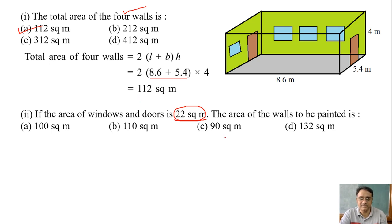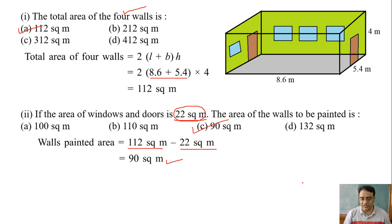Area of 4 walls minus area of windows and doors. Very good. So area of 4 walls minus area of windows and doors, that is 112 minus 22. We will get 90 square meter. So which option is the correct one? C. Right. Now we are moving toward the third question.